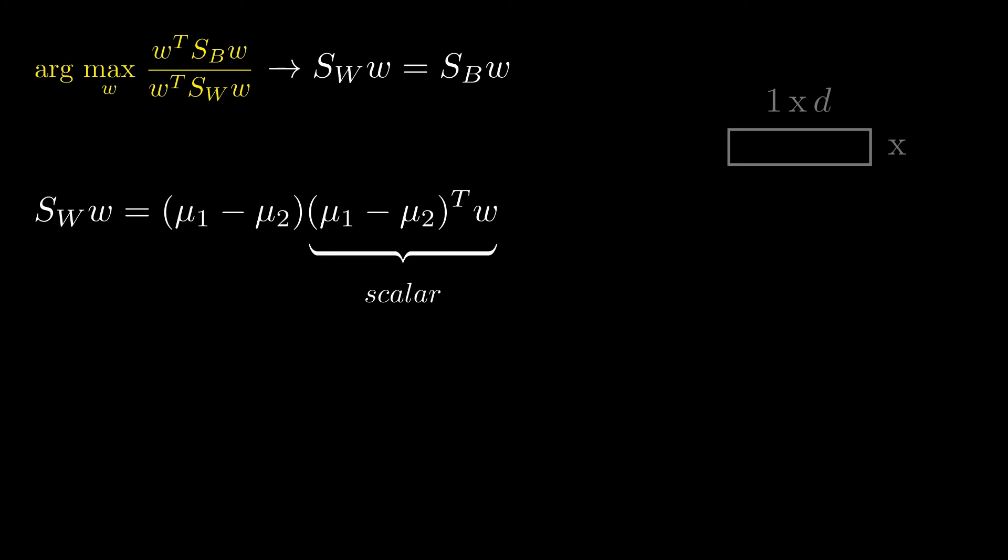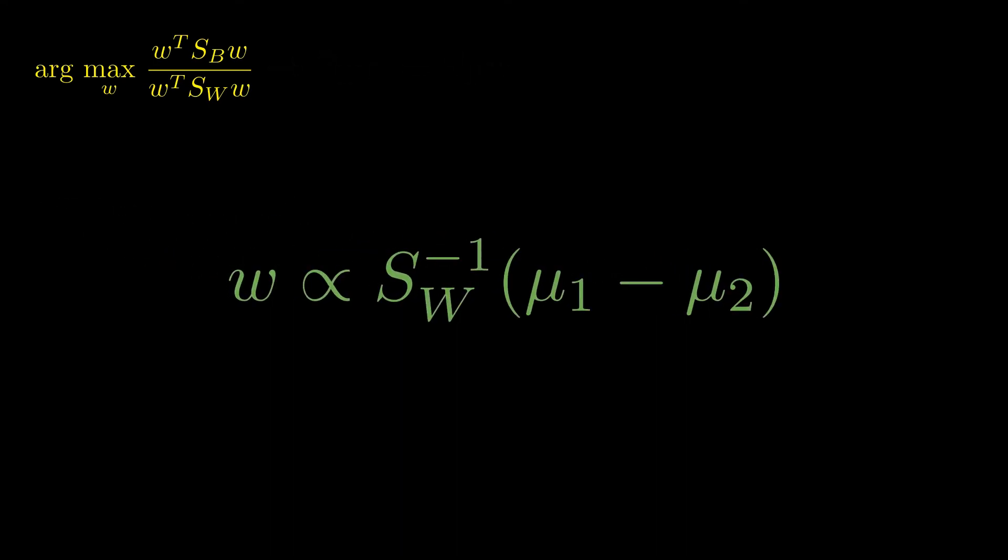What we can now again do is inject the formula for the between-class scatter matrix, Sb, and see that we again get a scalar value at the end. Since, just a quick reminder, a 1 times d vector multiplied with a d times 1 vector results in a scalar value. Okay, and as mentioned, we'll yet again ignore the scalar value. And what we are now left to do is multiply the sw matrix over to the other side and we arrive at the final solution. Where, just to be precise, this weird symbol denotes the proportionality.